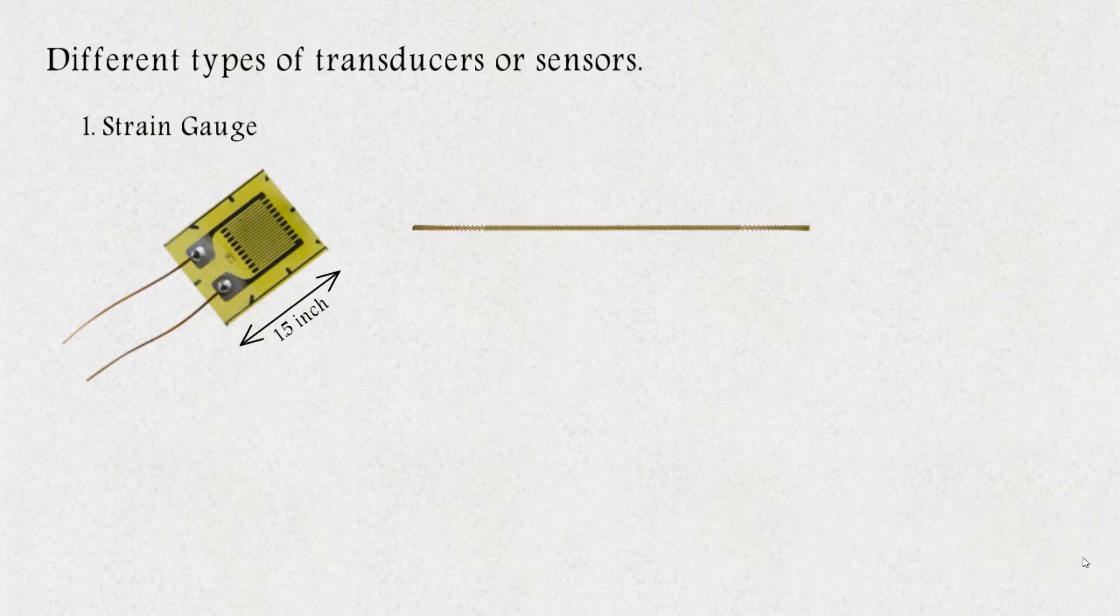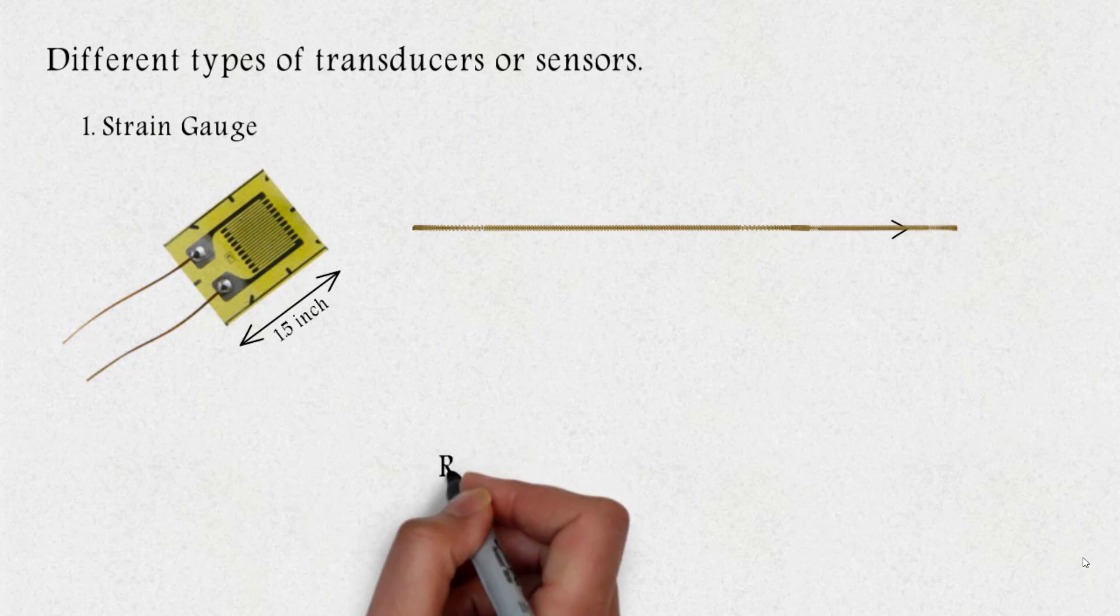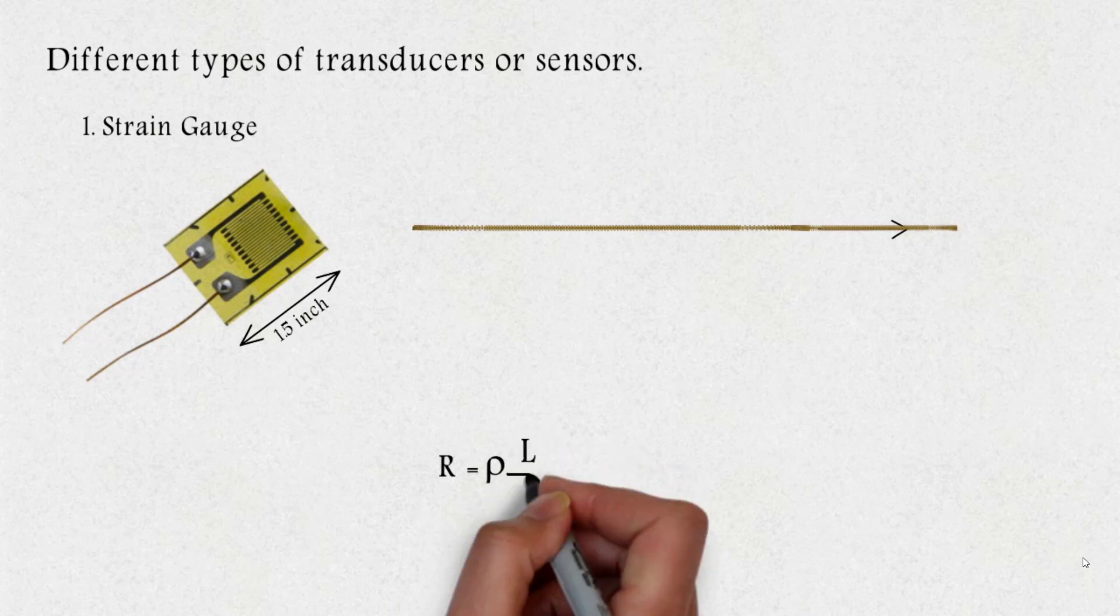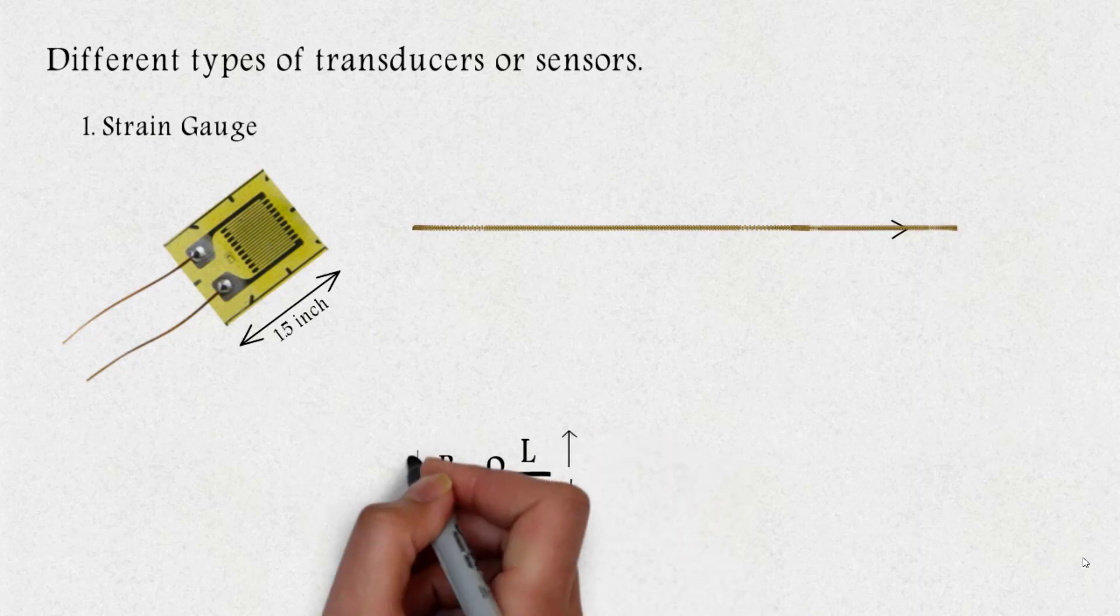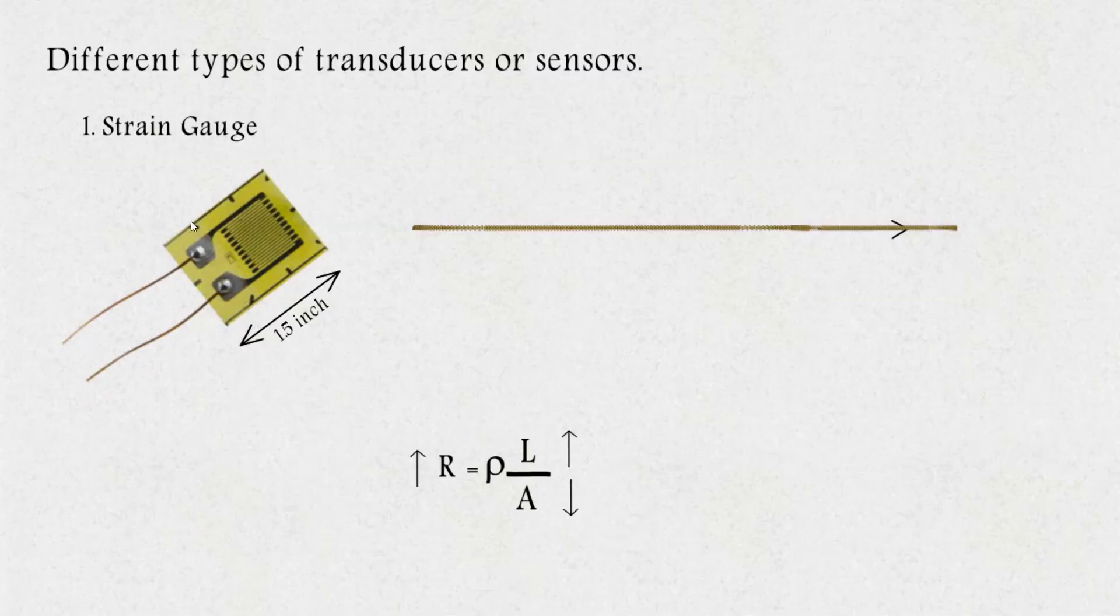As the physical quantity is applied in the form of tensile stress, the wire elongates and area of cross-section decreases. It follows R equals rho L by A law of resistors. As the length of the wire increase and area decrease, the resistance of the wire increases. Strain gauge sensors can be easily used for pressure and force sensing through the robot.